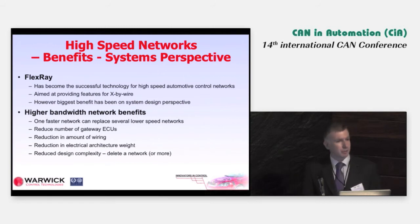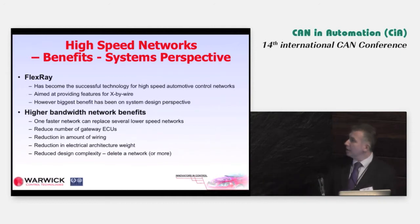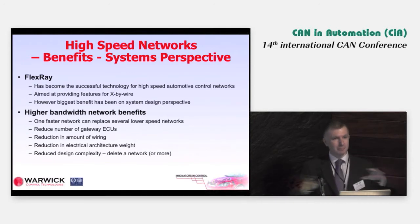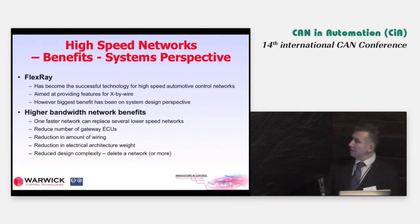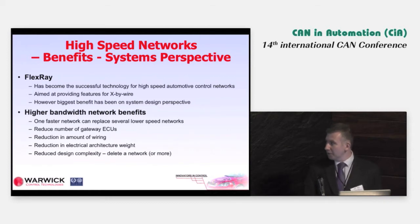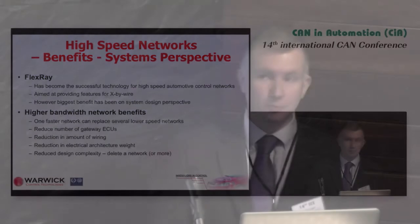It's not just FlexRay that provides the benefits — a faster network will provide similar benefits. If you look at the electrical architecture on a system basis, a high-speed network such as FlexRay can replace several lower-speed networks, for example CAN. That in turn reduces the number of ECUs required to gateway information between the different networks, reduces the amount of wiring in the vehicle, reduces the weight, and reduces the design complexity.